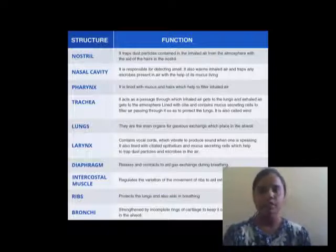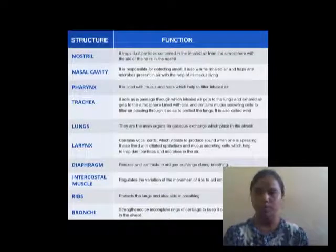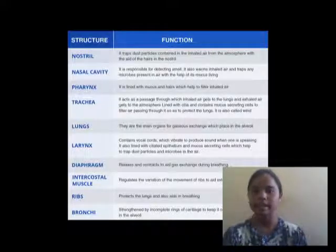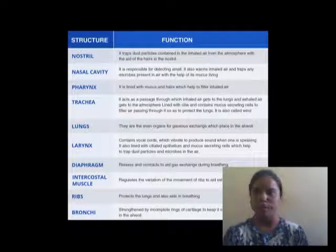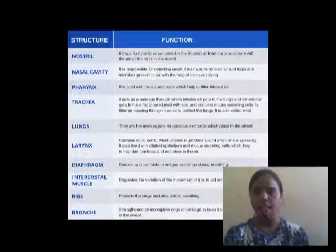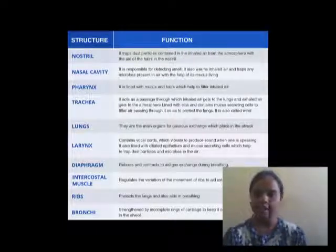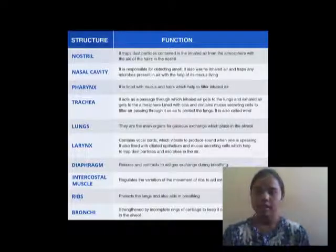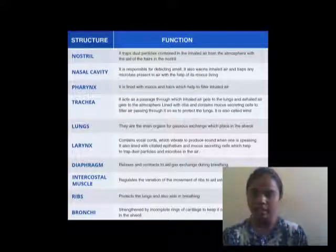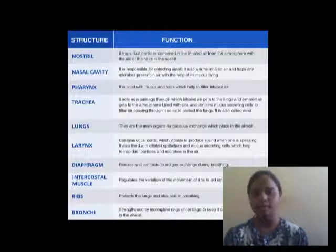Here are the functions of the structures of the respiratory system. Nostrils: they trap dust particles contained in the inhaled air. Nasal cavity: it is responsible for detecting smell. Pharynx is lined with mucus and hairs, which helps to filter air. Trachea acts as a passage through which inhaled air gets to the lungs and exhales out to the atmosphere. It is lined with mucus-secreting cells that filter air through it, protecting the lungs — so it is also called the windpipe.